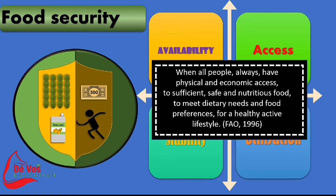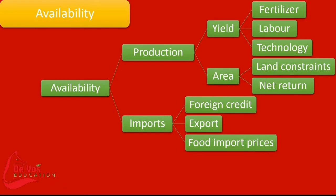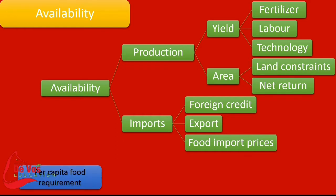Food availability relies on two legs. The first is production. We have to take into consideration the area available for production, which could lead to land constraints, and we have to look at our net return, as well as the yield of the product, which can rely on fertilizers, labor, and the technology involved. The second leg is about imports — foreign credit plays a huge role, as does how much a country can export and food import prices.